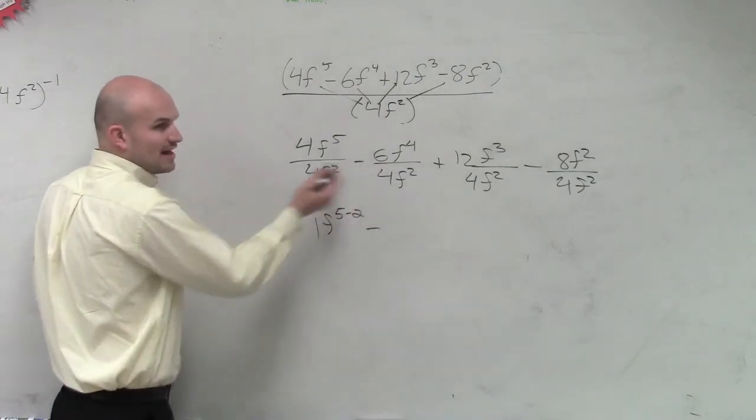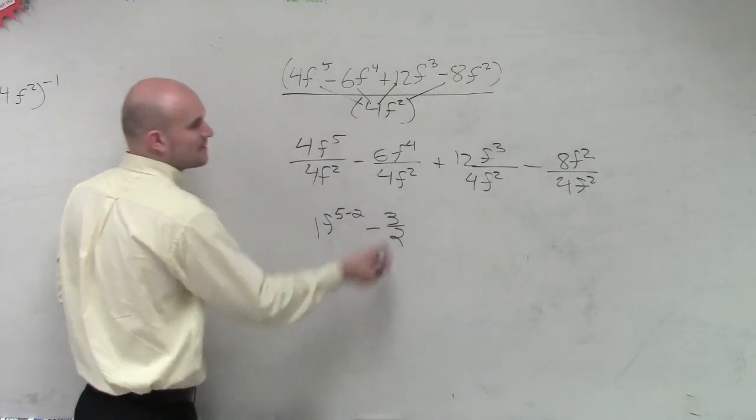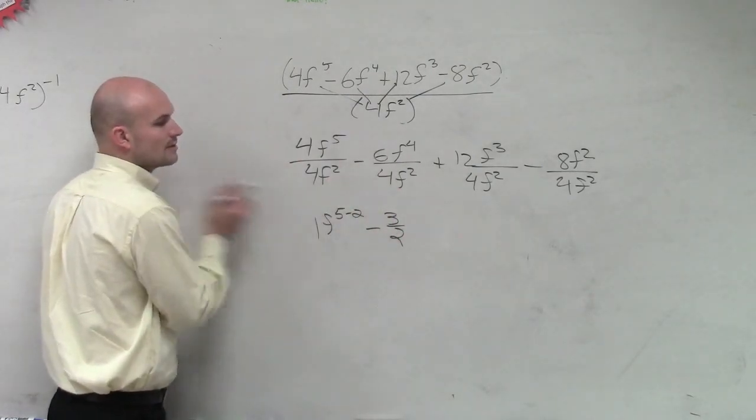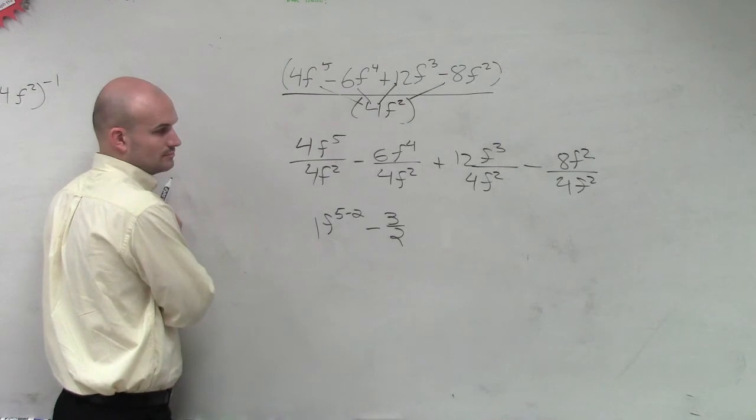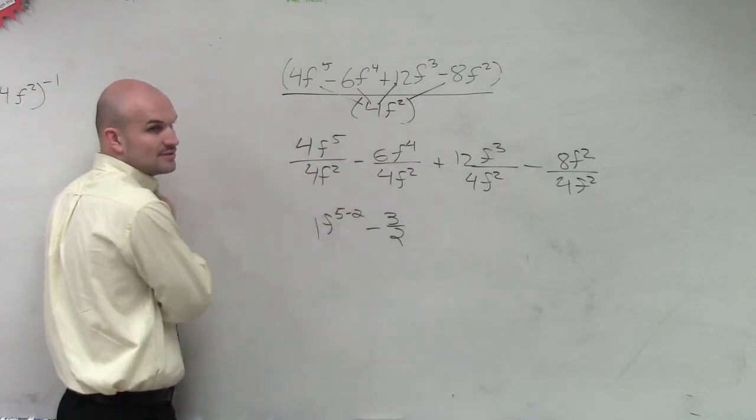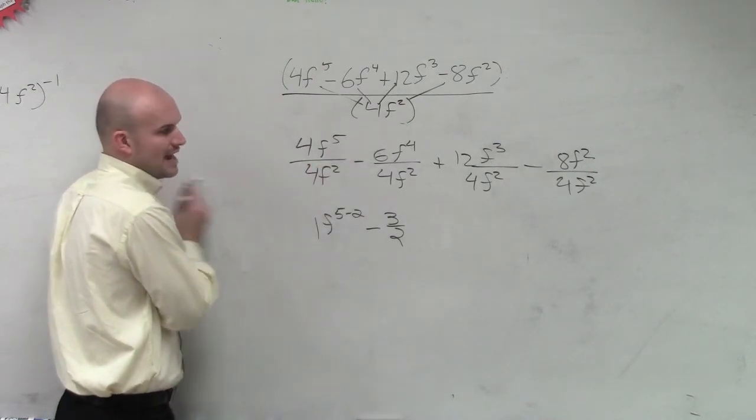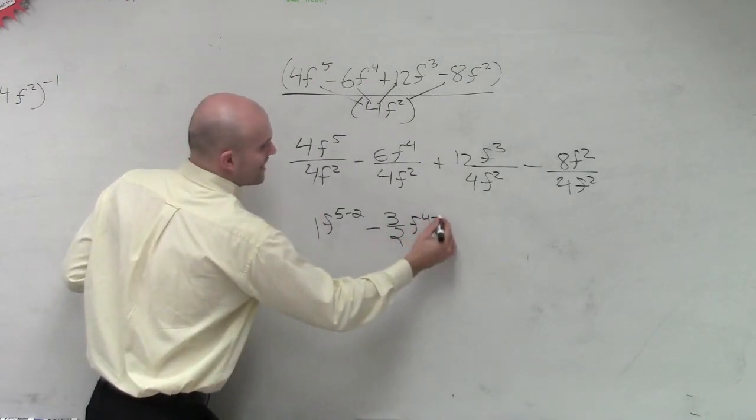Minus 6 divided by 4 reduces to 3 halves. Wouldn't it be negative 6 divided by 4? Or no, you can just leave it as 6 divided by 4. Right, but we can reduce that. Okay, so I reduced it to 3 halves, f to the 4 minus 2. I'm doing this kind of in a step-by-step procedure.